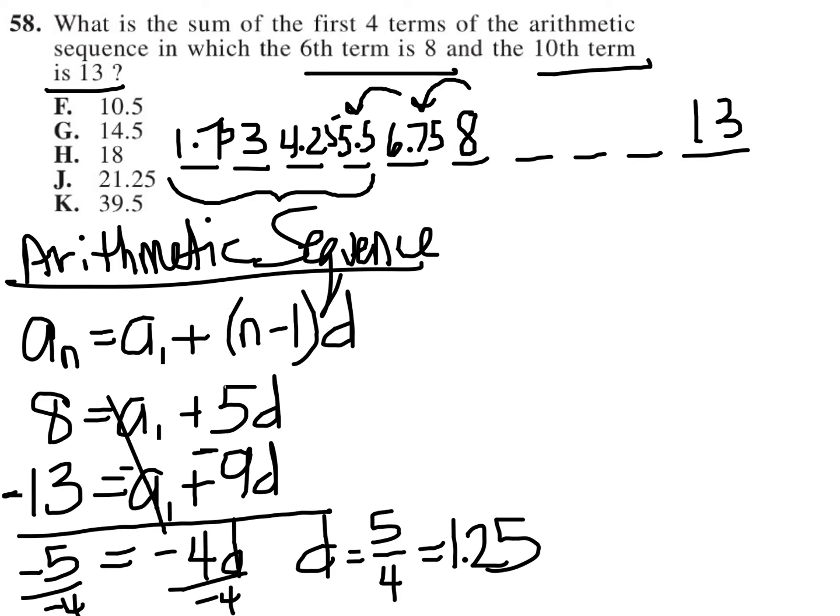So all that's really left to do now is to add up all those values together, and when you plug that into your calculator and add them all up, what you get is 14.5 as the answer, which is answer choice G.